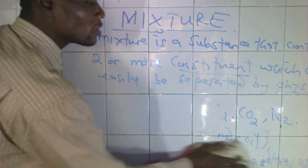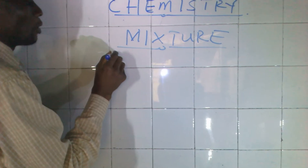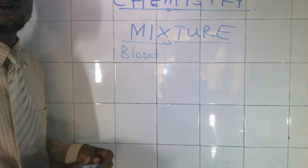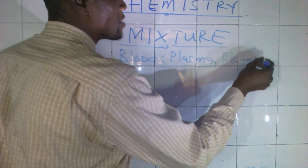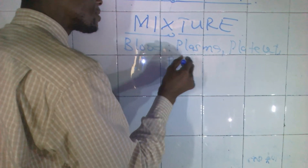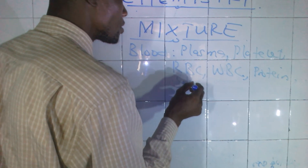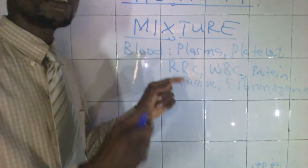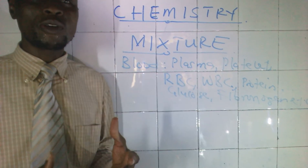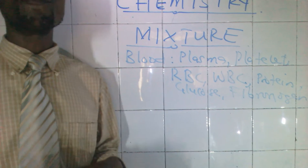Let's also look at some other examples of a mixture. Another one is blood — our blood is an example of a mixture. Why is blood a mixture? Inside blood, we have plasma, platelets, red blood cells, white blood cells, protein, glucose, and fibrinogen, among others. All these are inside blood, and you can separate each of these components using a physical method such as centrifugation. That's why blood is an example of a mixture.